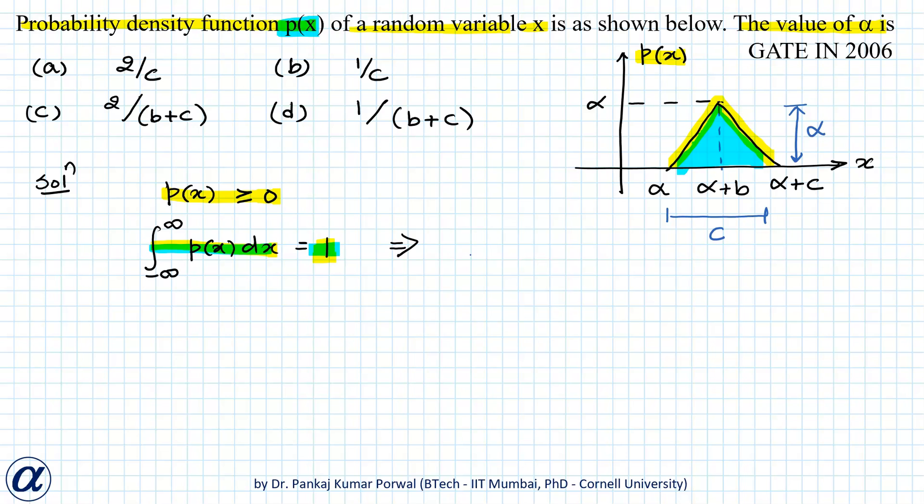So the area under the curve will equal half base times height equals one, and this gives me alpha equals two by c.